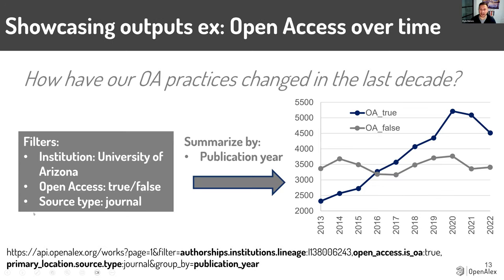The open access over time example is a graph I'm seeing more and more institutions produce, particularly in the library. I chose the University of Arizona, used an open access filter — separate analyses with true and false — limited to source type journals, then downloaded data summarized by publication year. I made this graph in Excel in about 30 seconds. I can show the mechanics of going from the download to a graph in Q&A, but it's very easy to get that information.